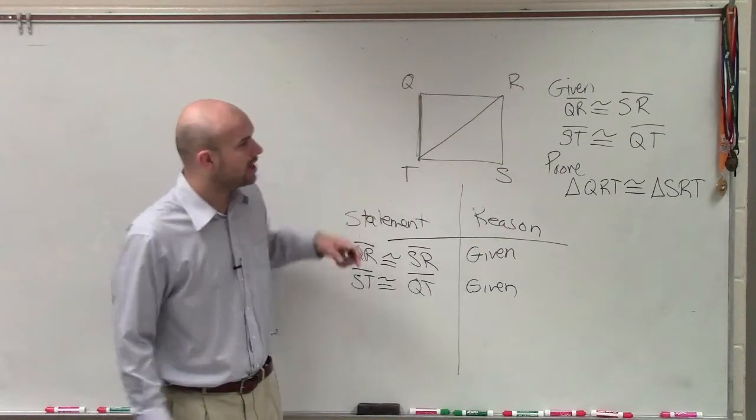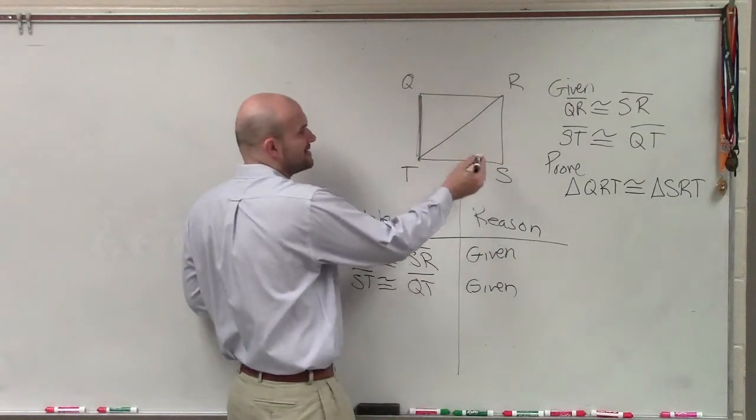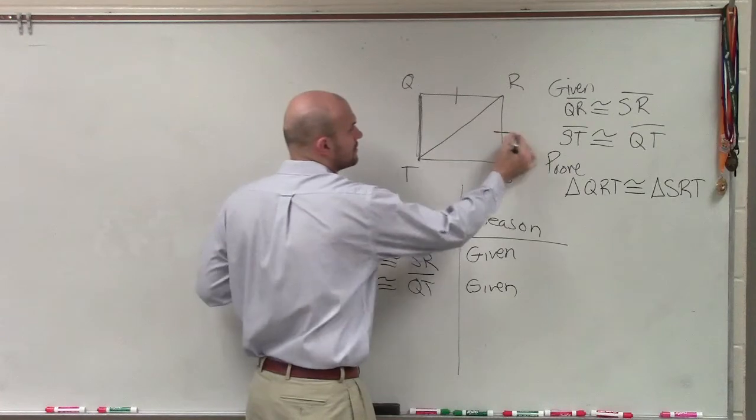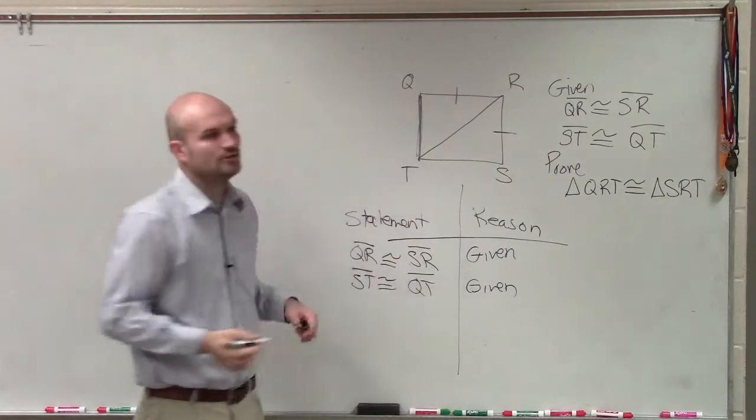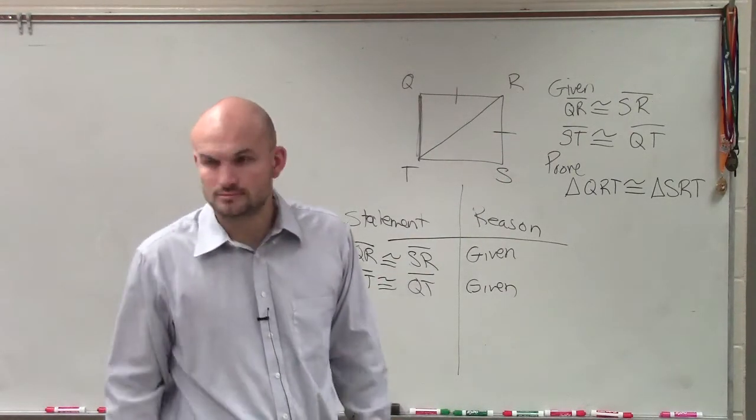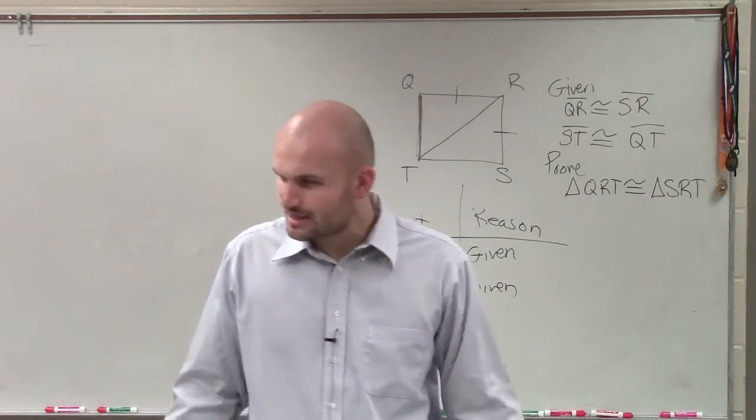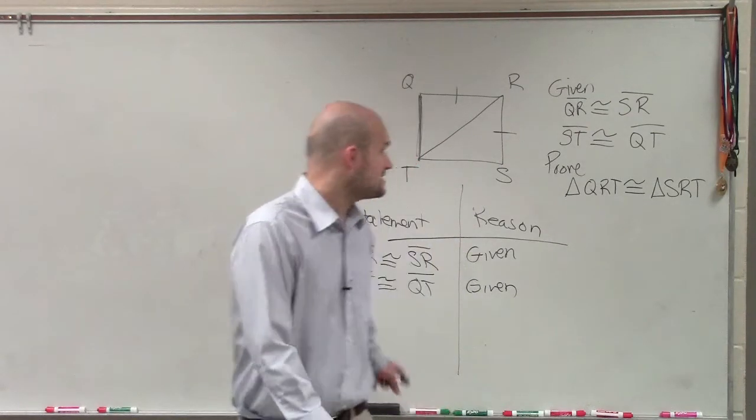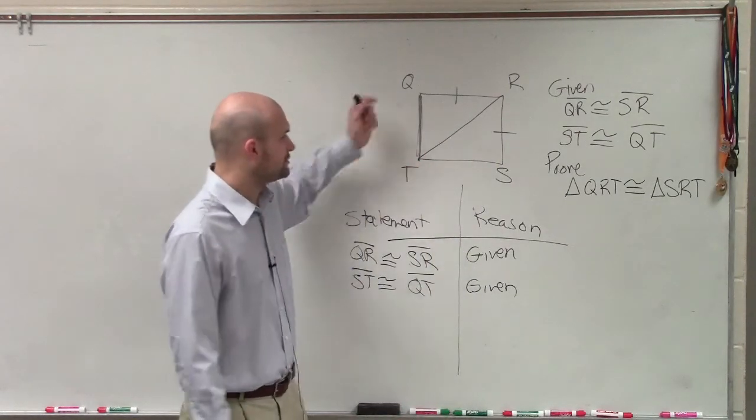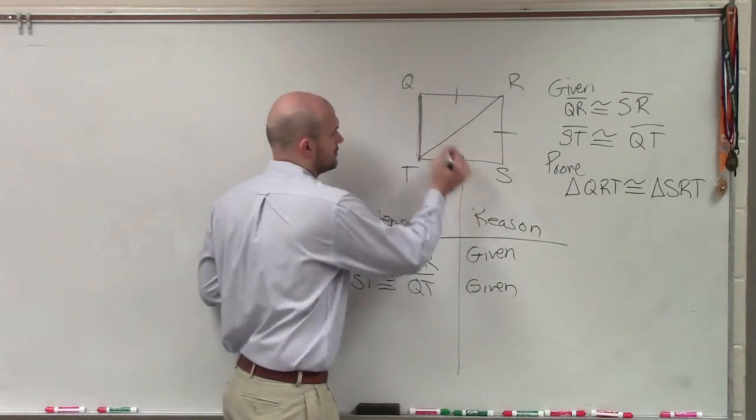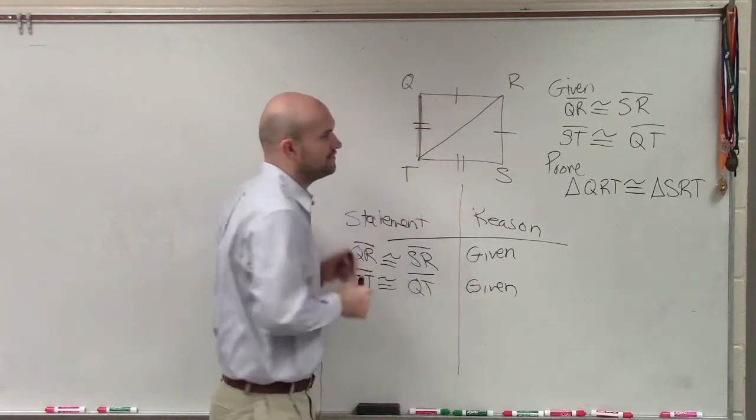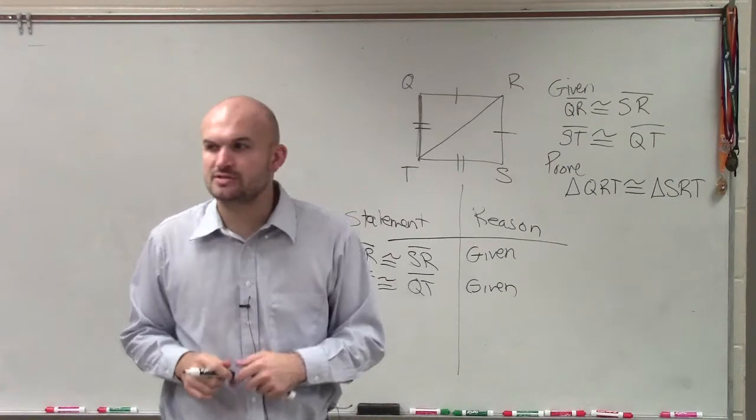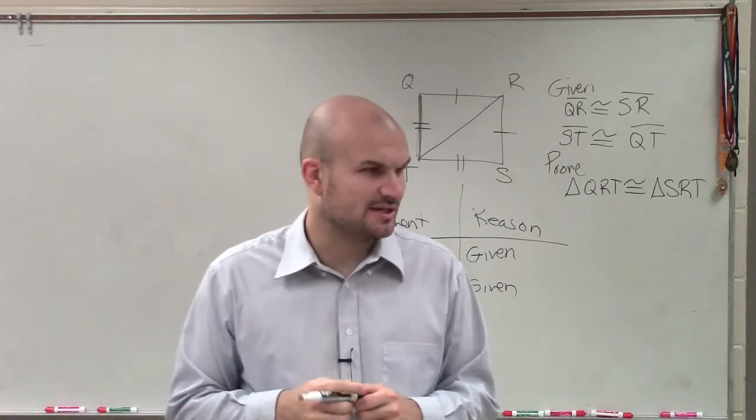So here we have QR is congruent to SR. So we know those two are equal, right? So I put a tick mark on my figure. The next one, ST is equal to QT. I don't know if they're the same as the other one, so I'm just going to use two tick marks because I don't know if they're exactly equal to the other one.